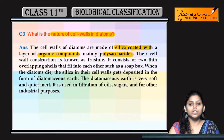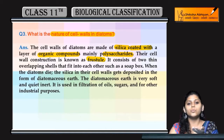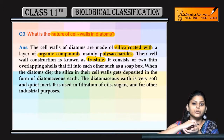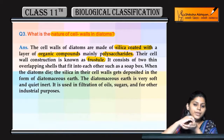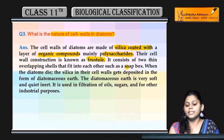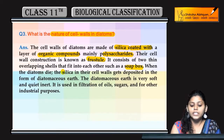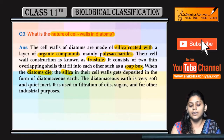Diatoms ki cell wall ki jo construction hoti hai usko bolte hain frustule. Ye kaisa organization hai — like a soap box. Aapne dekha hoga, soap case hota hai aur uski lid hoti hai, jab ye cover ho jata hai toh ye us tarike ka structure banata hai. Isi construction ko bolte hain frustule.